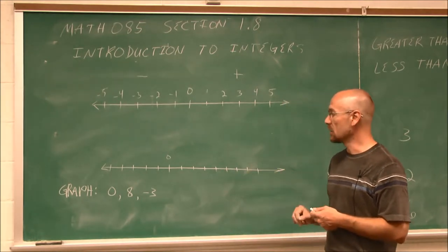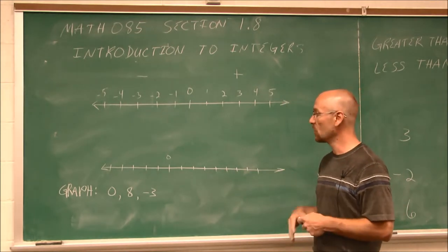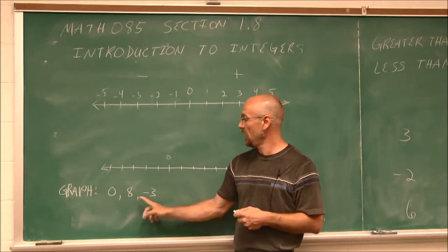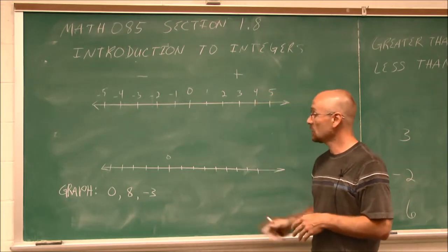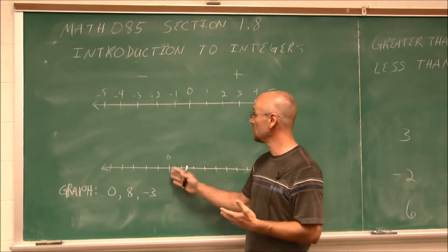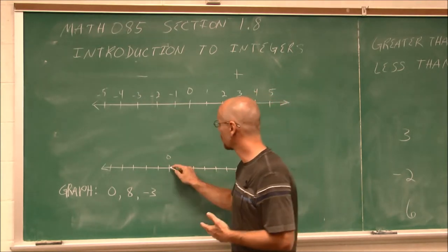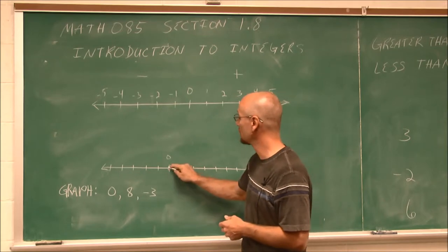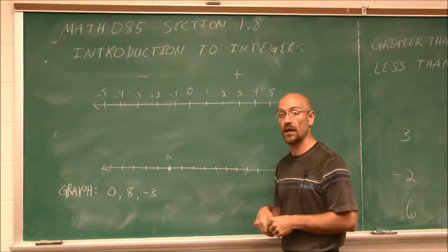Looking at our number line, let's get a feel for where we find values. We're going to graph these values: 0, 8, and negative 3. We'll start left to right. I'm going to find zero on my number line. Here, zero is our reference point. So I'm going to graph it. To graph a number, we just put a nice solid dot.